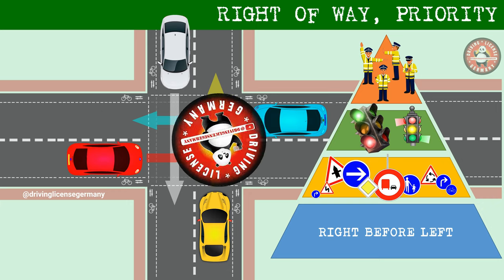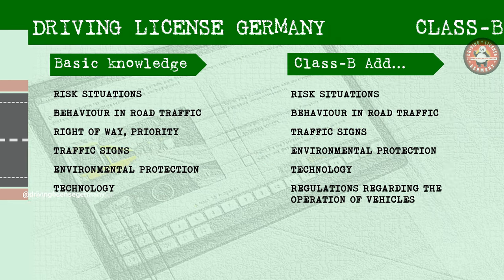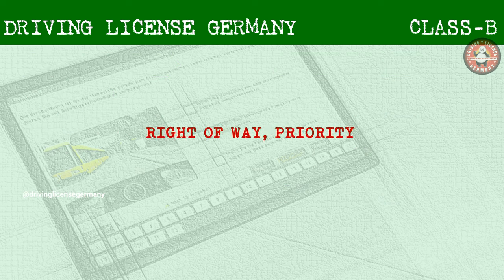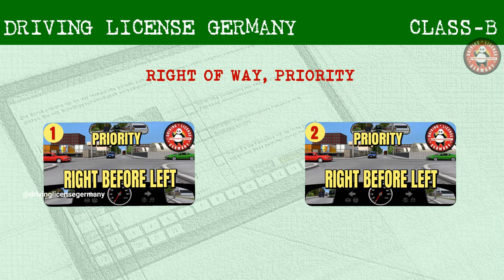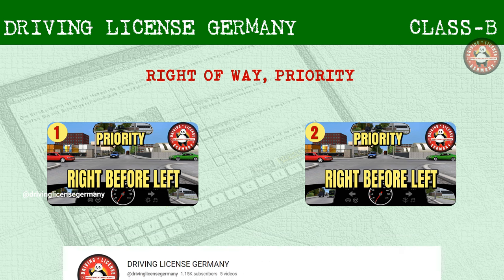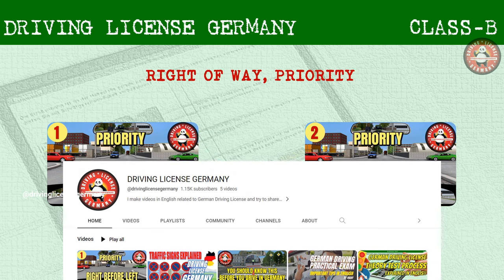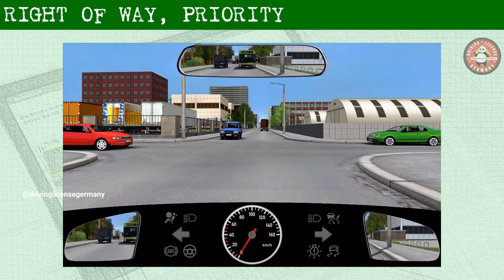Hi, this is Vicky and welcome to my channel. This video series is very important for the theory test because you get three questions, five points each, from this topic: right of way and priority. This is the second part of the video series. In the first part we learned about right of way and priority rules for parallel moving traffic.